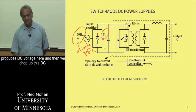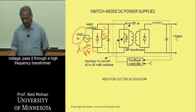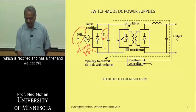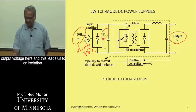And then we chop up this DC voltage, pass it through a high frequency transformer, which is rectified. And there's a filter. And we get this output voltage here.